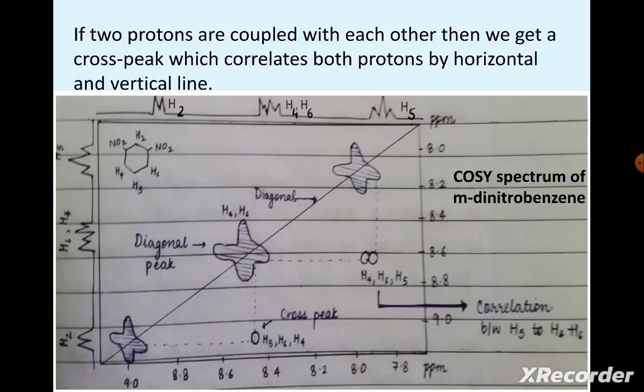We can observe the diagonal peak and how the diagonal is made. The shape that is drawn on the diagonal is known as a contour plot.